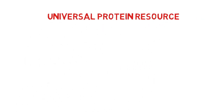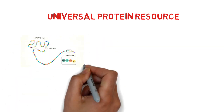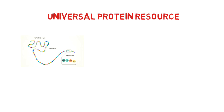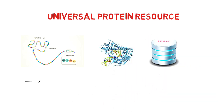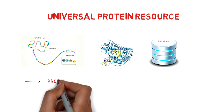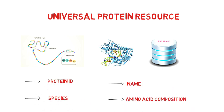Universal Protein Resource is another name for UniProt. It is a database from which several different protein sequences can be retrieved. It holds a great deal of knowledge about proteins and is the most significant database. It offers details on protein ID, including its species, name, amino acid composition, etc.